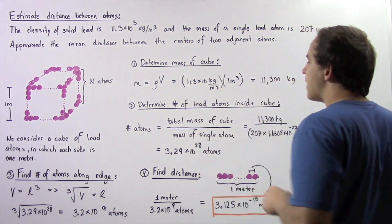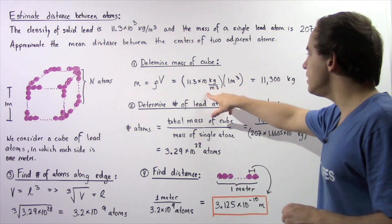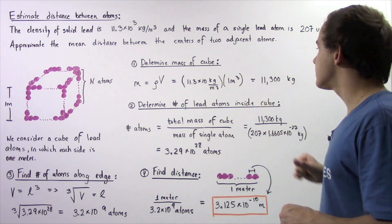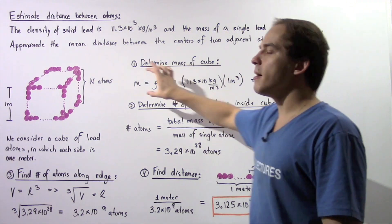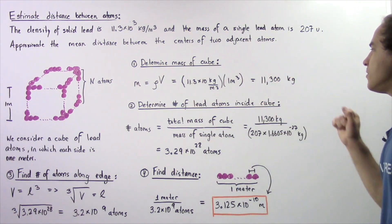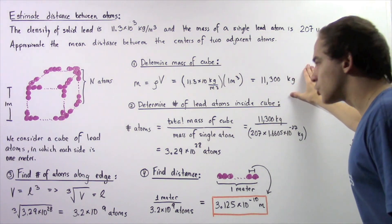And the density is given to be 11.3 times 10 to the 3 kilograms per meter cubed. We multiply these values out. The meters cubed cancel out and we're left with a mass of 11,300 kilograms.